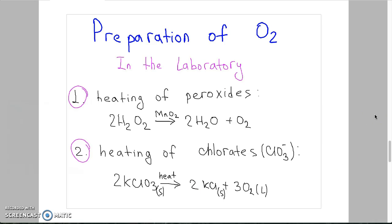Okay, let's talk about preparation of oxygen in laboratory. We have 4 main methods of preparing. First one is the heating of peroxides. For example, if we take hydrogen peroxide in reaction under the catalyst magnesium oxide, in products will have water molecule and oxygen gas.